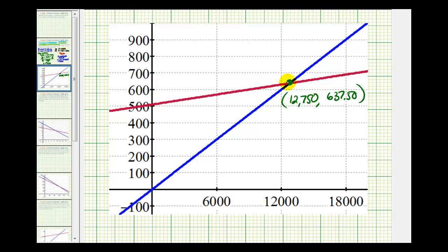So again, notice if your sales are more than 12,750, the straight commission offer will give you a higher weekly pay. Okay, I hope you found this helpful.